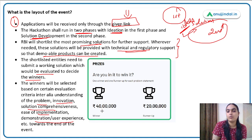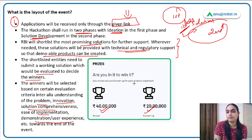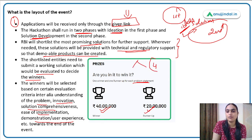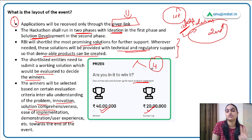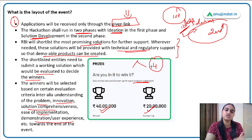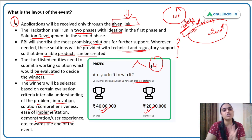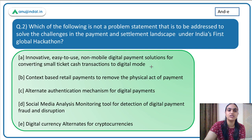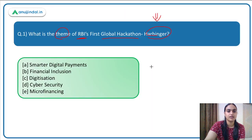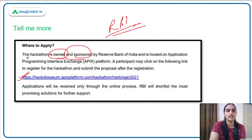The winner will receive a reward of 40 lakh rupees and the runner-up 20 lakh rupees. For each of the four problem statements, one winner and one runner-up will be selected — so there will be four winners and four runner-ups in total. Coming back to the first question: what is the theme of this event? The answer is option A — smarter digital payments.